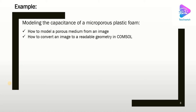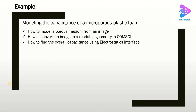One thing we are going to discuss today is how to convert an image to a readable geometry in COMSOL. This method can be used for other shapes, not necessarily for porous structures. We can basically use this technique to import other images or pictures into COMSOL Multiphysics software — it can be used for other systems as well. Finally, we are going to find the overall capacitance using the Electrostatics interface, so we are going to review this interface as well.